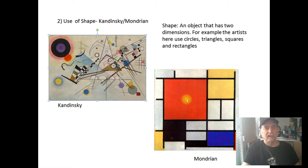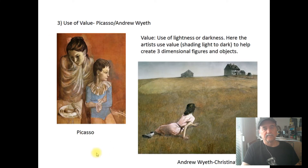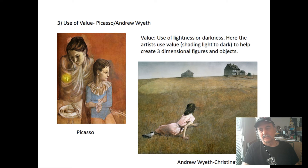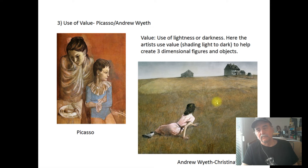Moving on, we see the use of value in a few different artworks. This one by Picasso — values from light to dark — creates a portrait of a woman with her child, where the folds in the clothing are created by different values of a kind of brown. The painting on the right is by Andrew Wyeth; the darks and lights are very effectively used, perhaps more gradually than in Picasso's work. It's called Christina's World — a painting worth a whole discussion on its own.